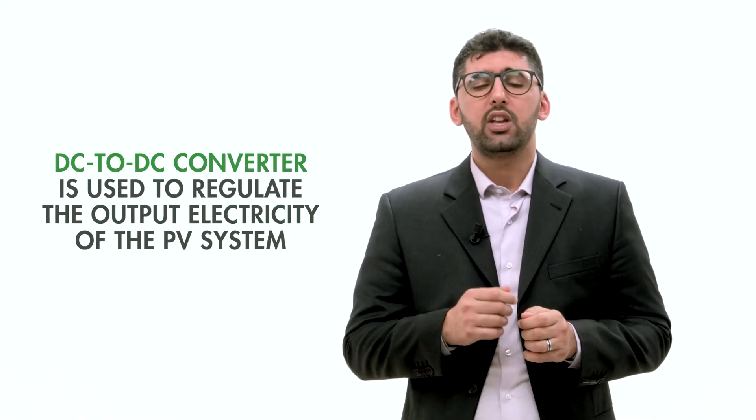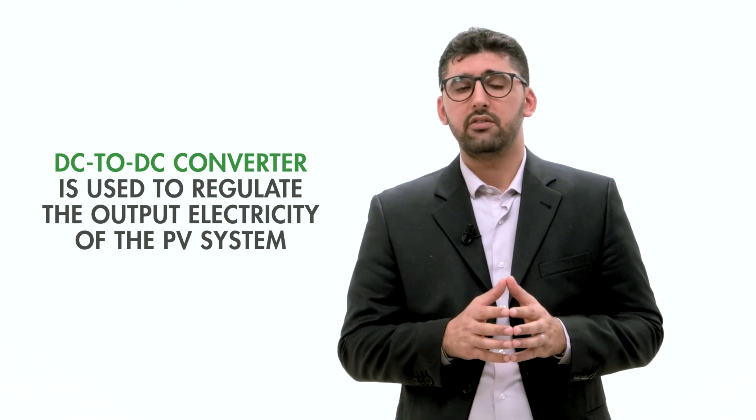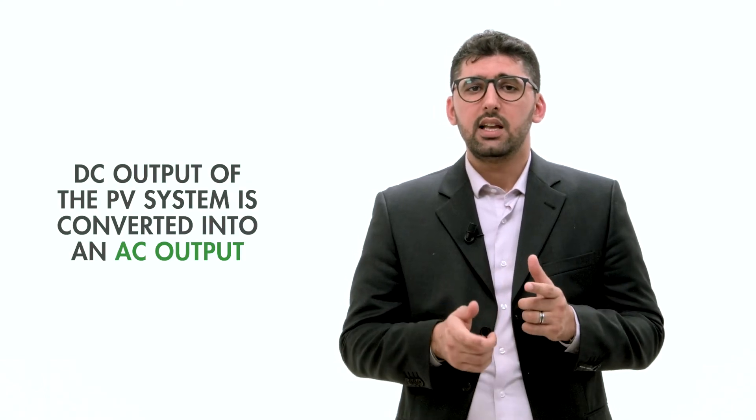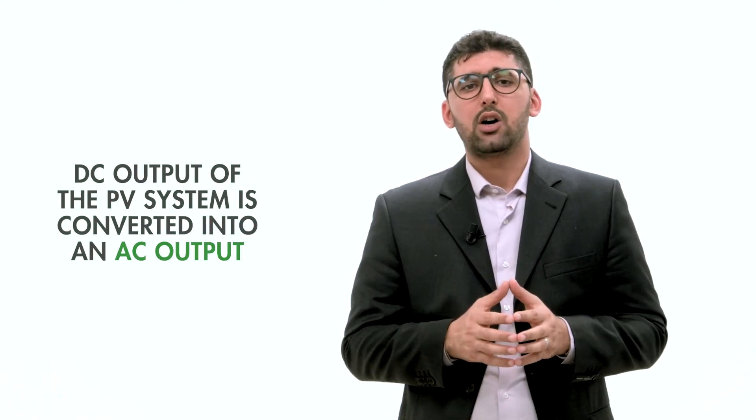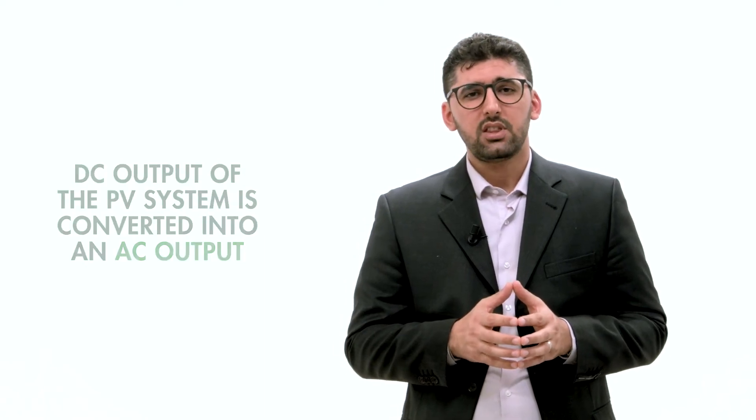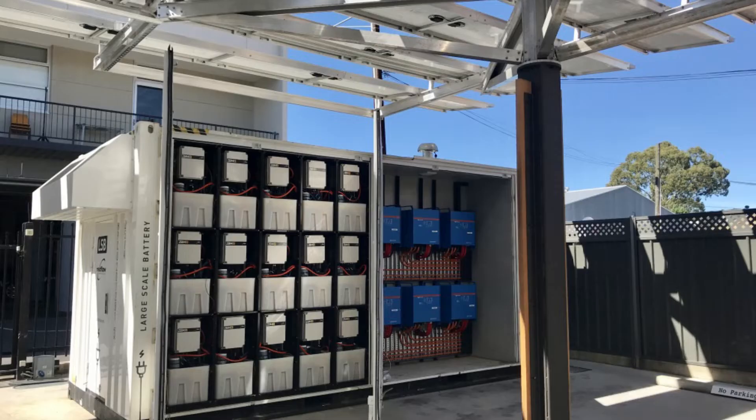Since the sun energy is not constant due to weather change, a DC-to-DC converter is used to regulate the output electricity of the PV system. Then the regulated DC output of the PV system is converted into AC output via an inverter, because most of the appliances are AC-dependent. Those electronic instruments are called power electronic converters and they are very important instruments to harness most types of renewable energy resources.